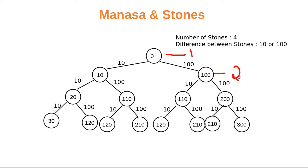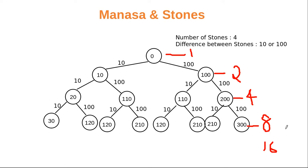At level one we have one possibility, at level two we have two, at level three we have four, at level four we have eight, and if there were one more level the possibilities would be 16. It just keeps multiplying by two — one, two, four, eight, sixteen. So we can say it's 2 to the power n.